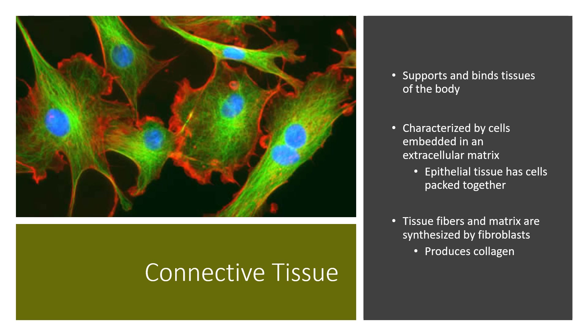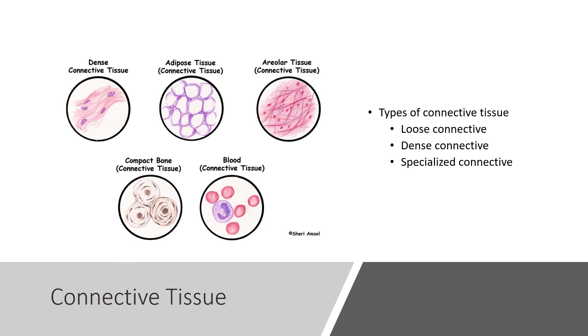Moving on to connective tissue. There are many connective tissue types, and they are incredibly important because they support and bind tissues to the body. Connective tissues are characterized by cells that are embedded in an extracellular matrix — in epithelial tissue, all the cells are just packed together, but connective tissue has that extracellular matrix. The tissue fibers and the matrix are synthesized by fibroblasts that produce collagen. There are loose connective, dense connective, and several specialized connective tissue types.